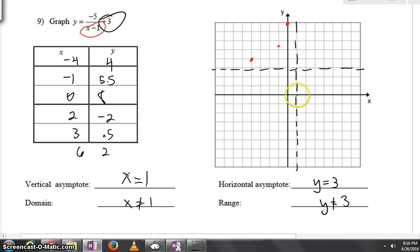2, negative 2. Go 2 to the right, go down 2. 3 to the right, go up just a half step. And then 6 to the right, we could actually go up 2. And look at this, you can definitely see the curvature taking place.